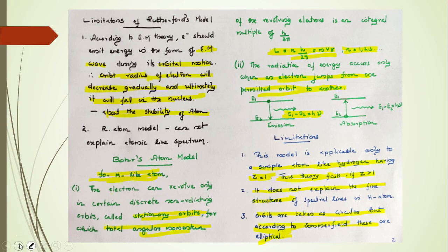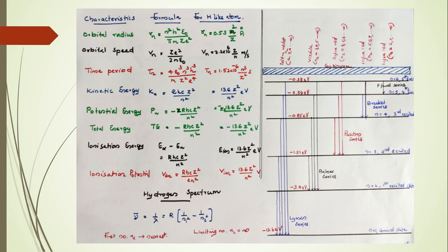Based on the Bohr atom model for hydrogen-like atoms, we can discuss some of the characteristics for examination point of view. Different parameters of hydrogen-like atoms. We will discuss: the radius, orbital speed, the time period. These three things are the first concepts. The kinetic energy, potential energy, total energy, then ionization energy and ionization potential.